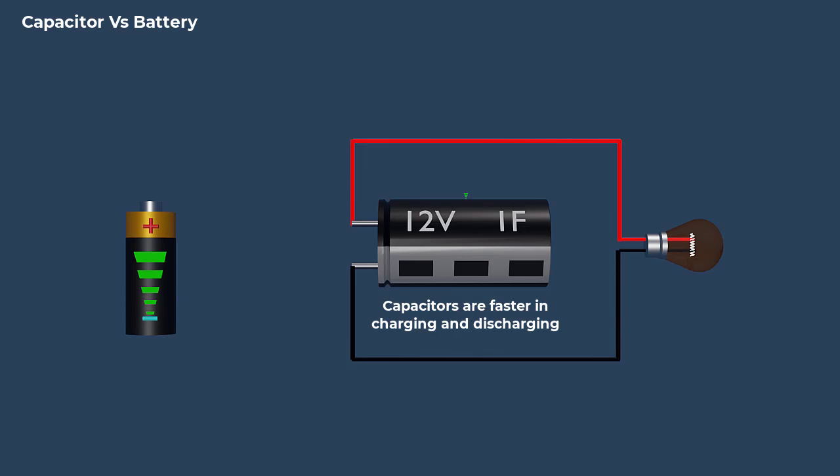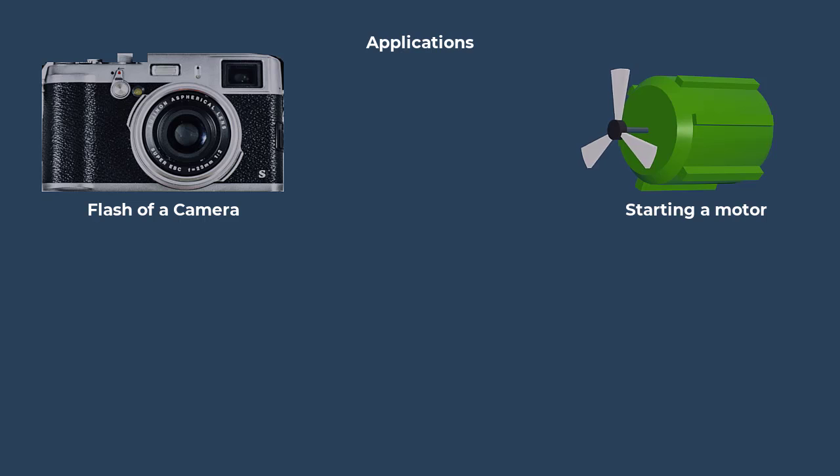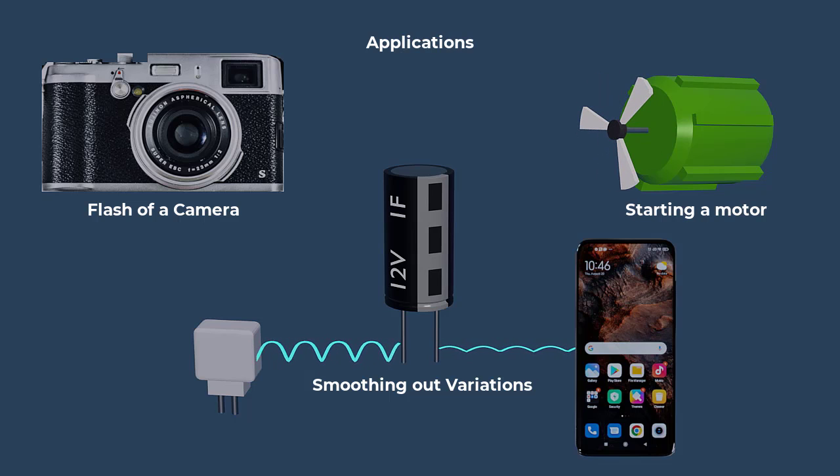Capacitors are generally faster in charging and discharging, making them suitable for applications that require quick bursts of energy, such as flash of a camera, starting a motor, and smoothing out variation in the output of a power supply, such as those found in mobile chargers.